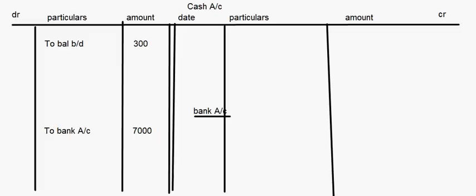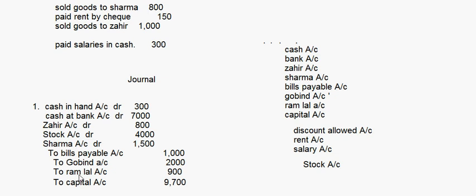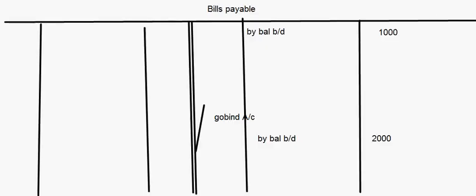Going back to the journal entry: Ramlal account Rs. 900 and capital account Rs. 9,700. Ramlal account has a credit balance, so write 'by balance brought down Rs. 900'. Capital account always has a credit balance, so write 'by balance brought down Rs. 9,700'. That completes the opening balances.